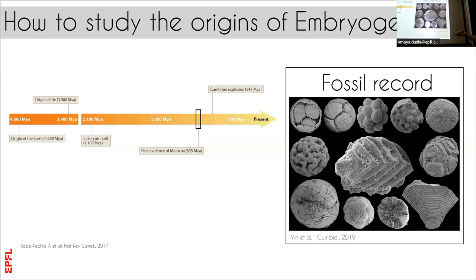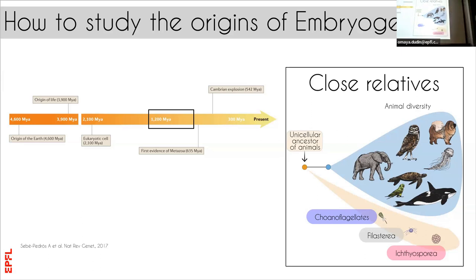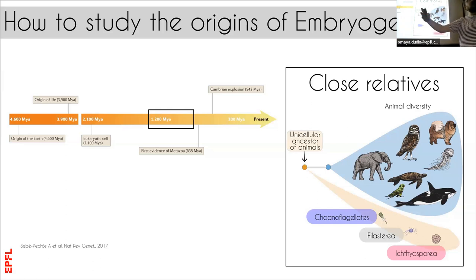The other approach is to actually investigate the fossil's living relatives. By investigating these organisms, we expect to better understand what the characteristics of early animals looked like, and to actually understand how this transition to multicellularity and animal development happened gradually.